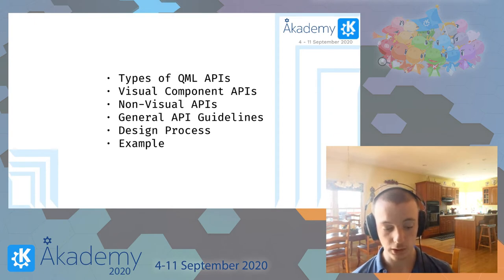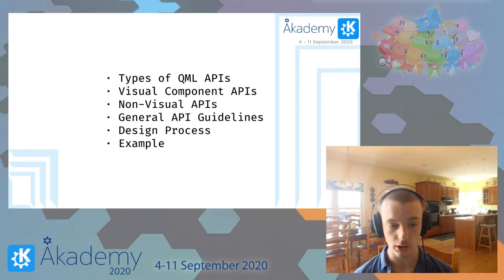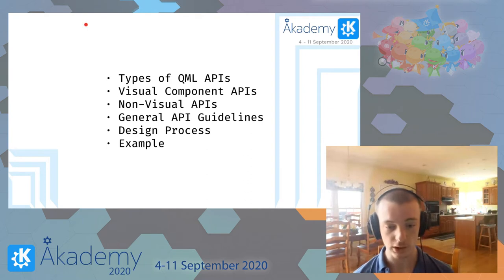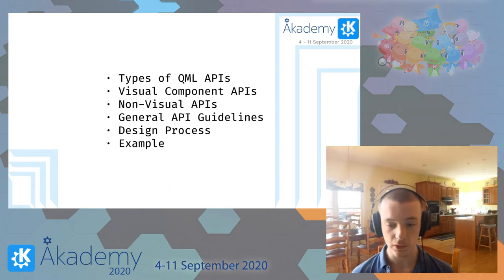If you're watching this presentation, I would hope that you already know what QML is like. You have the basic declarative syntax where you specify an object and you specify its properties and its functions on it, as well as the signals to react to other things. QML is certainly about the exchange of data between the declarative QML side and the imperative C++ side, or if you're using another language like Python or Go, your imperative side of the code can also be built with that. I generally consider there to be two main types of QML APIs.